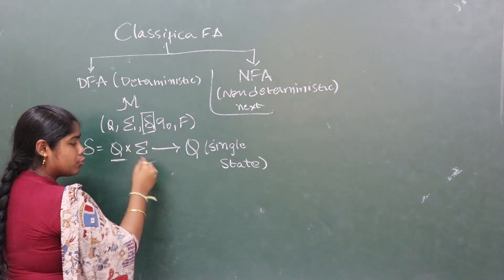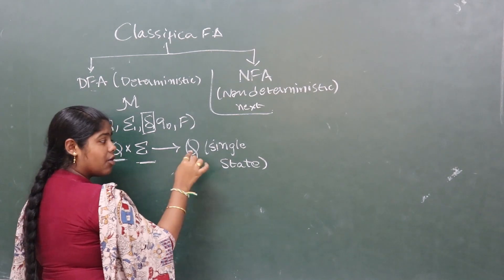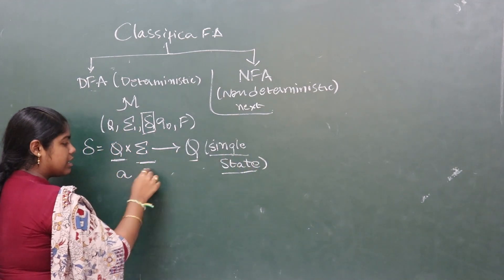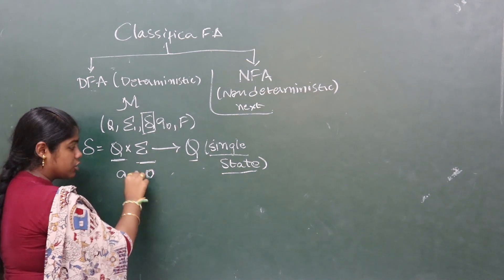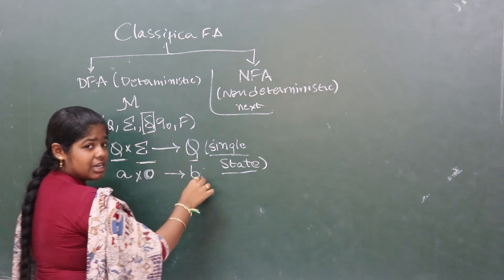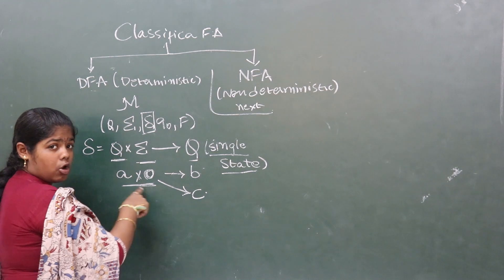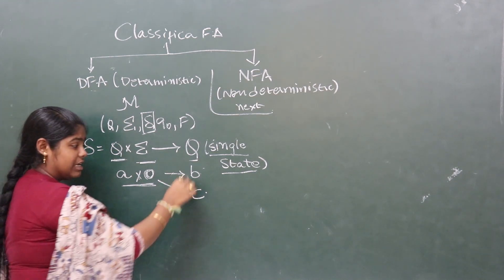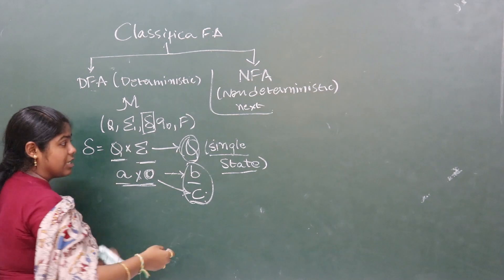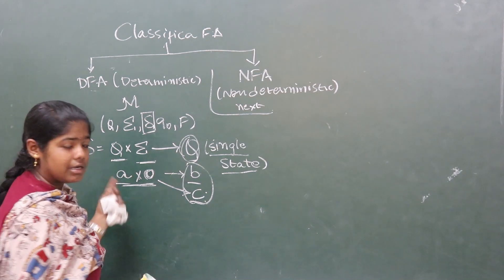When we take the cross product of an input state and input alphabet, we need to get a state from the set of Q. The output state must be a single state. Suppose state A with input alphabet 0, the output state is some B. With input alphabet 0, we can only travel to state B. It is not possible to obtain another state C using this transition. That means A cross 0 can only go to one single state. States A, B, C must all be in the set Q. This is deterministic finite automata.